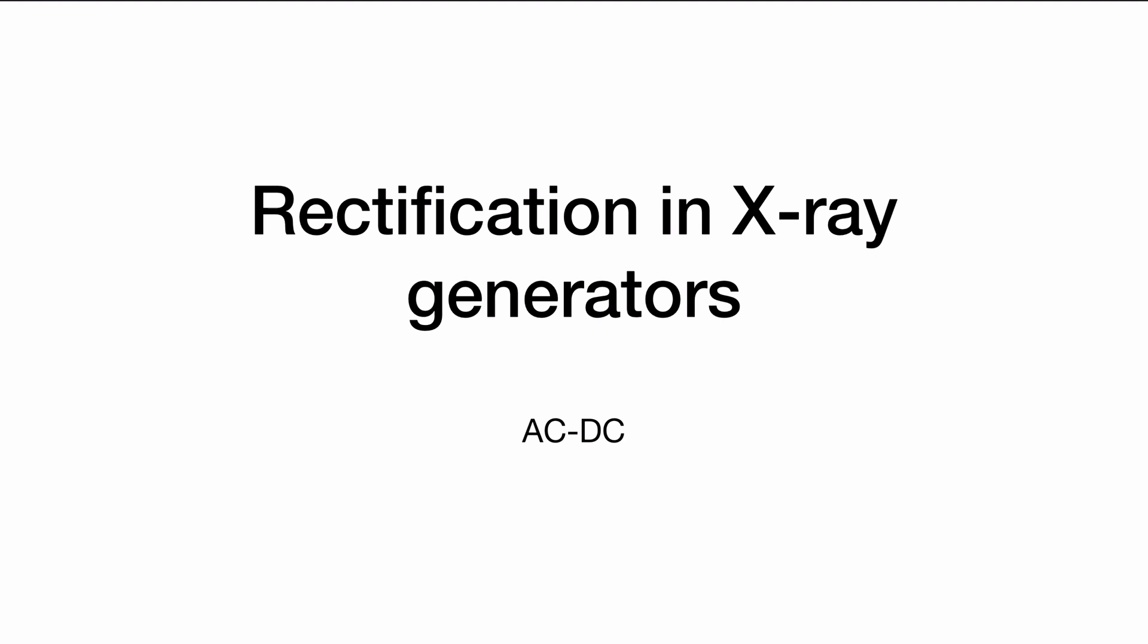Welcome. In this video, I wanted to talk about an important and necessary process in X-ray generation, in particular with X-ray tubes, and that's a process of rectification. Essentially, we are converting AC current, or AC alternating current, to DC direct current.